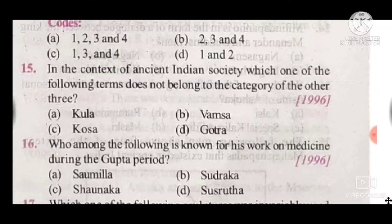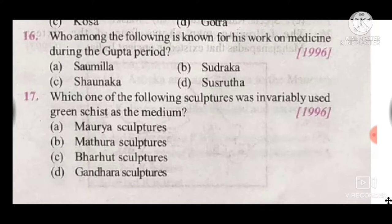Question 17: Which one of the following scriptures was invariably used in green sessions as the medium? The answer is C, Brihat scripture (Brihadaranyaka).